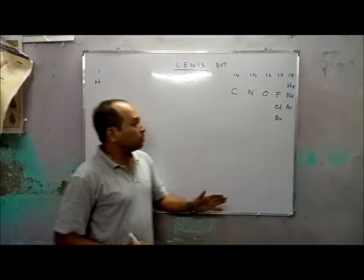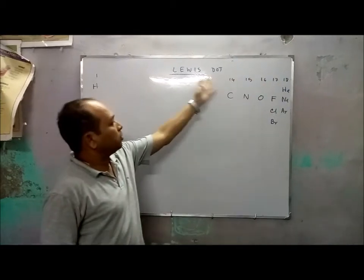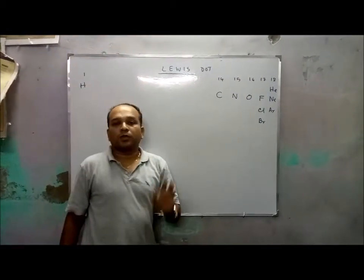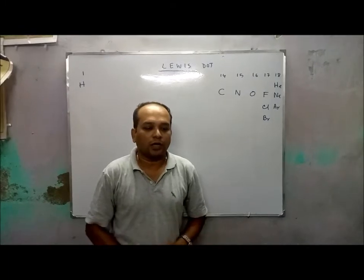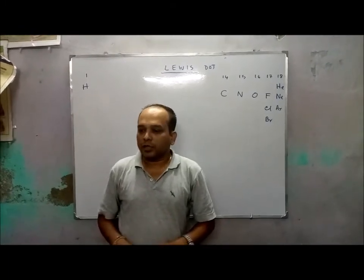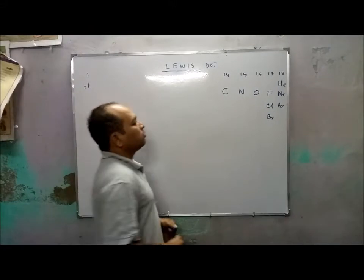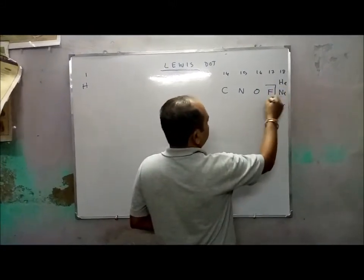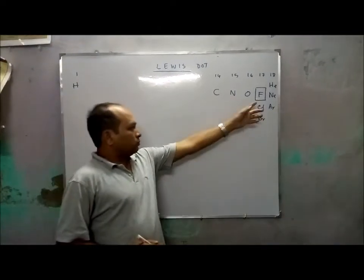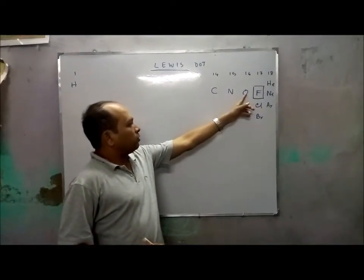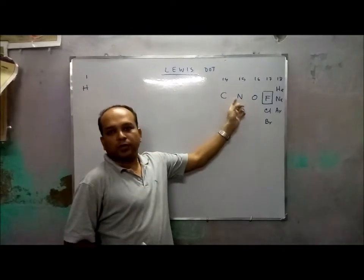When we go from group 18 towards group 1, the electronegativity of the atom generally decreases. The highest electronegativity element is fluorine (chlorine region). As we proceed from chlorine to oxygen to nitrogen and carbon, the electronegativity decreases.